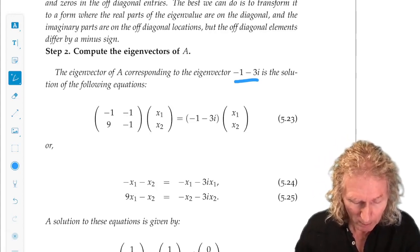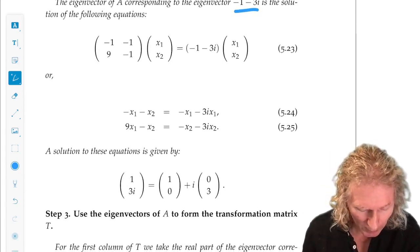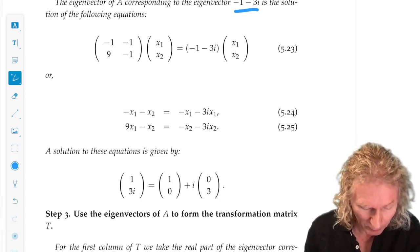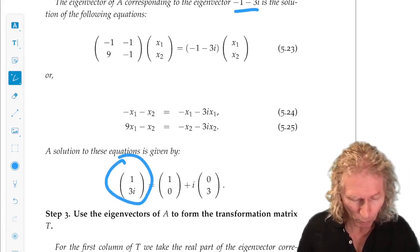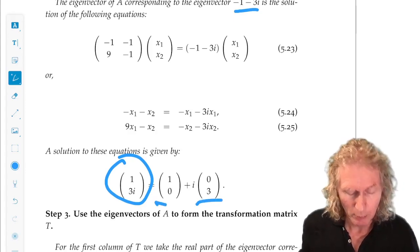We compute the eigenvector corresponding to that eigenvalue, and we get, it's going to be complex, 1, 3i. And that has a real and an imaginary part.